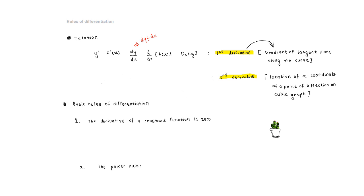The second derivative is what will help us locate the point of inflection when sketching a cubic graph. We denote this by writing y double prime, f double prime of x, d squared y by dx squared, d squared by dx squared of f of x, or simply dx squared of a function y.